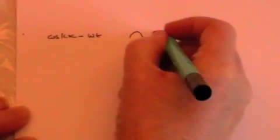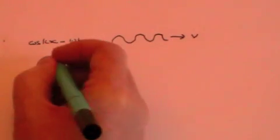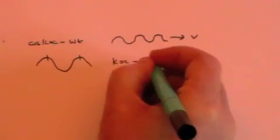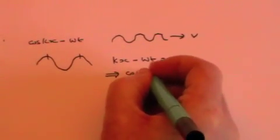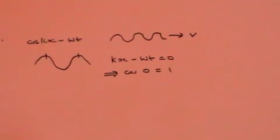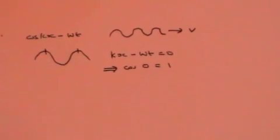If we now take the second part, cosine kx minus omega t, this is what's known as a travelling wave, because the wave will actually move at velocity v to the right. I'll tell you what v is in a little while. Where do the peaks fall in this wave? Well, the wave will reach its maximum amplitude when kx minus omega t is zero. Because when kx minus omega t is zero, cosine of zero is one, and that's the maximum amplitude.